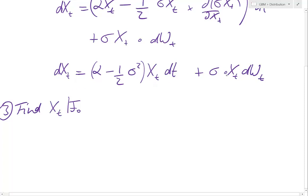Therefore, we divide everything by Xt, and we have on the left hand side dXt divided by Xt equals alpha minus half sigma squared dt.